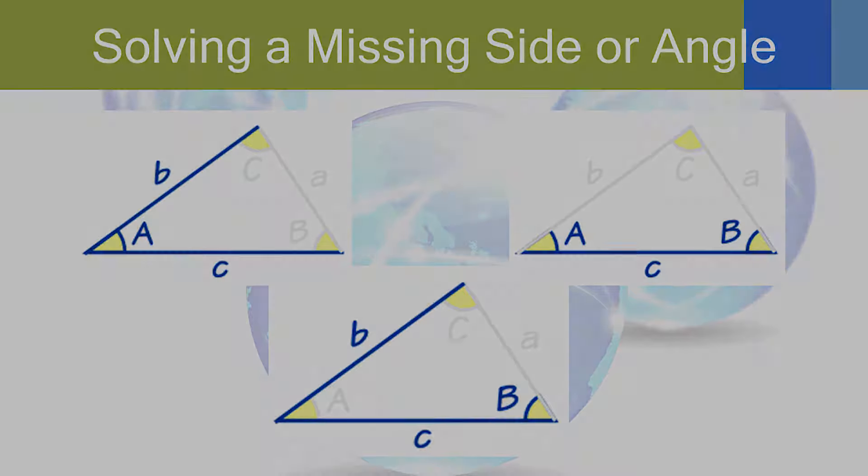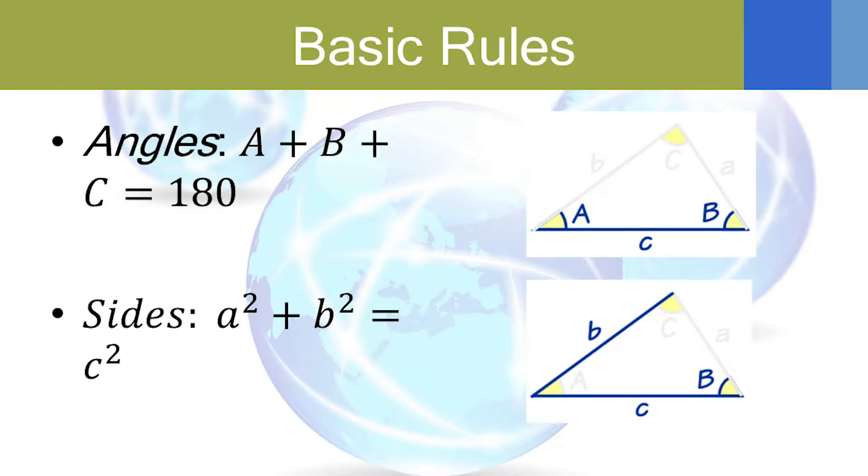My rule is A plus B plus C equals 180. So if I'm given two angles, 60 and 60, 60 plus 60 is 120. The remaining angle is 60. All right? What about sides?